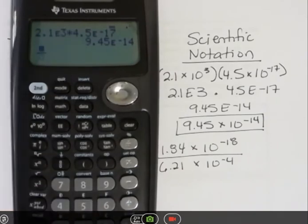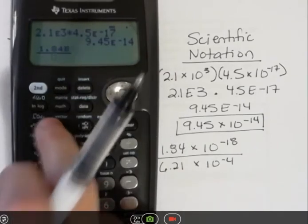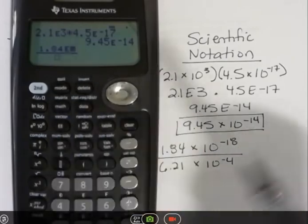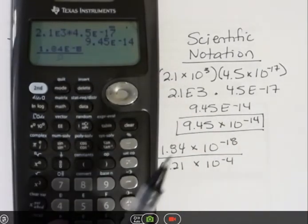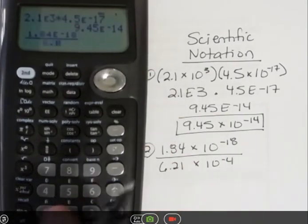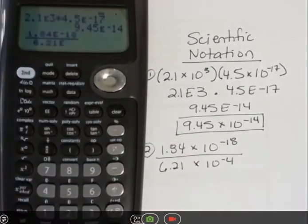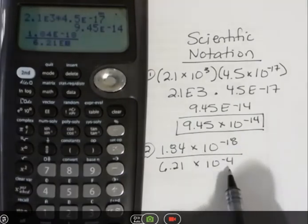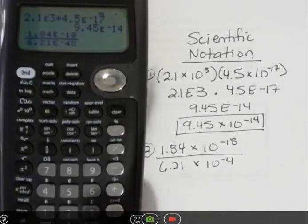Hit that fraction bar, and on top 1.84e, and it's the EE button, and then negative 18, and then use your arrow key down, and 6.21 EE, and then negative 4, and then hit enter.